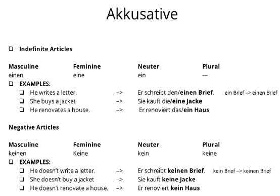Let's see what changes have to be made in indefinite articles. For masculine nouns the article will be changed to 'einen'; for feminine it will remain 'eine'; for neuter it will remain 'ein'; and for plural we cannot use 'ein'. So we see that here again the only change that has to be made is in case of masculine nouns, where the article has to end with 'en'.